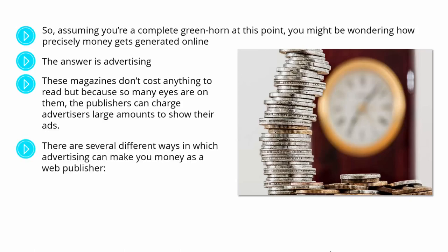There are several different ways in which advertising can make you money as a web publisher. PPC — this is pay-per-click, and popular examples include the likes of Google Ads. You can also get CPM, which means cost per impression. PPC pays out when someone clicks on one of your ads, and CPM pays out each time an advert loads on your site. You sign up to the ad network, get given some code, place it on your site, and start earning.